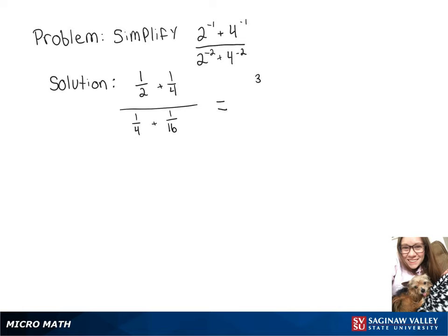Simplifying that, we have 3 fourths over 5 over 16. When we divide by a fraction, we have to multiply by the reciprocal. So down here, we'll do 3 fourths times 16 over 5.